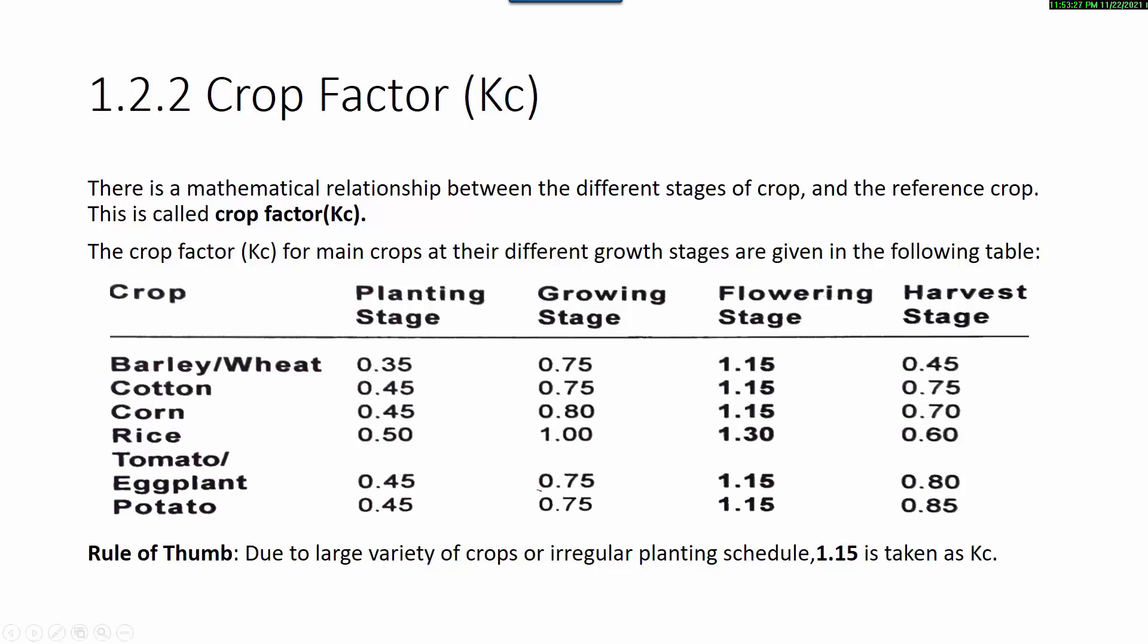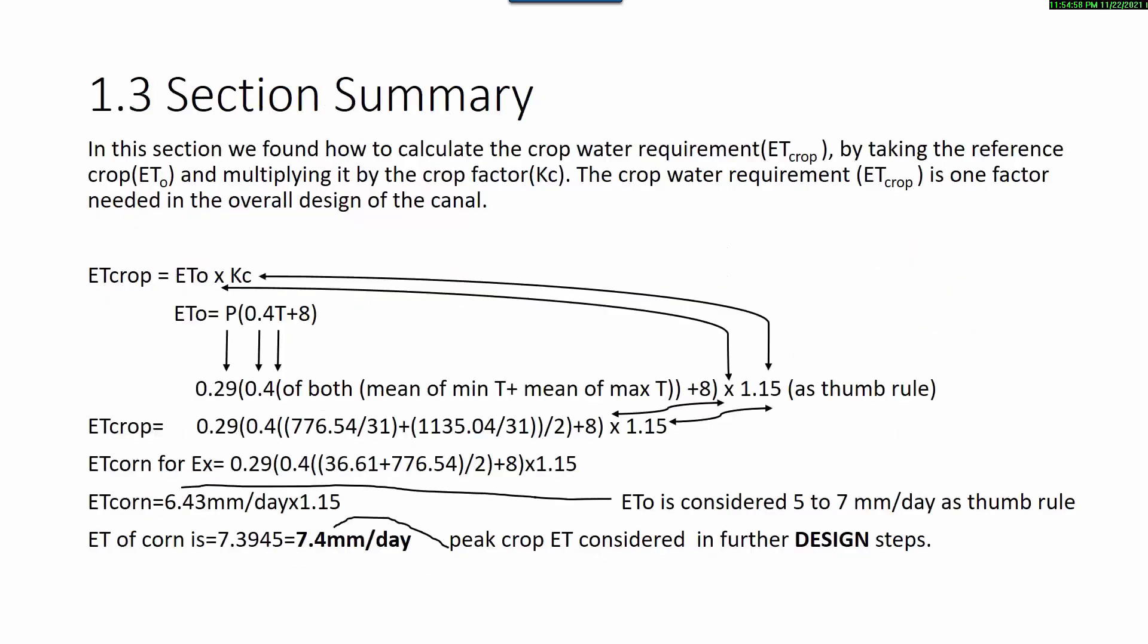From planting to harvest stage, we have different crop factors. As we see, in the flowering stage the crop factor amount is higher than others, at 1.15. This could be considered as a rule of thumb in further calculations due to irregular planting schedules and the large variety of crops.